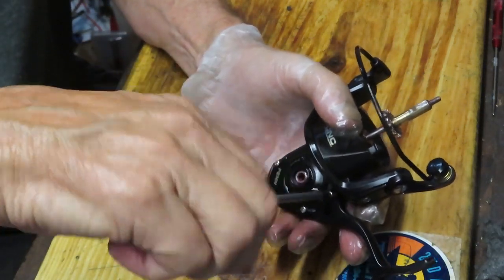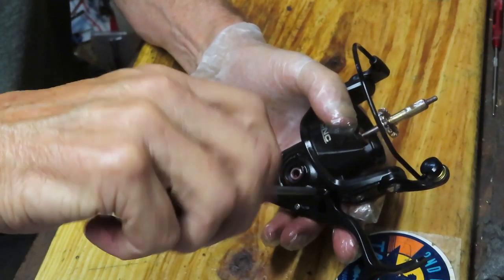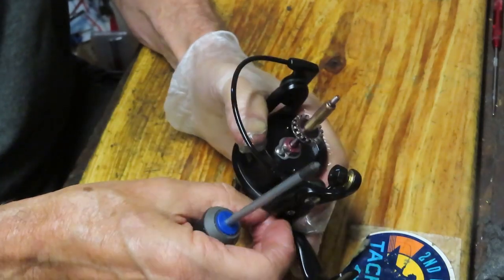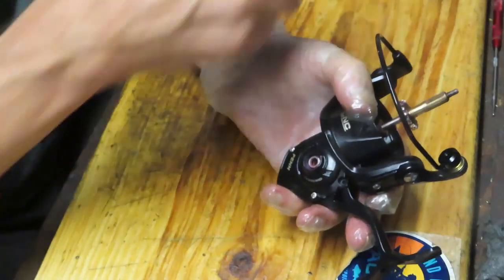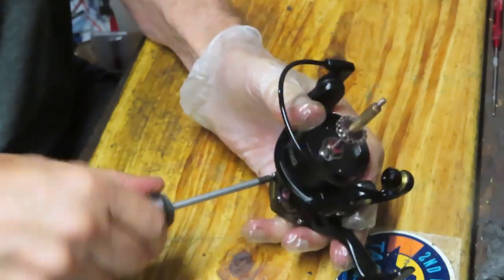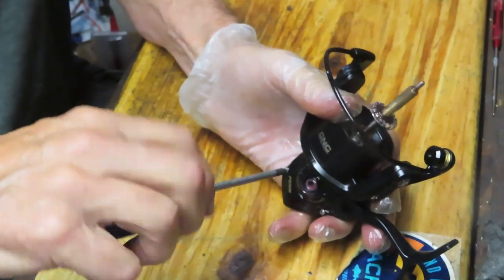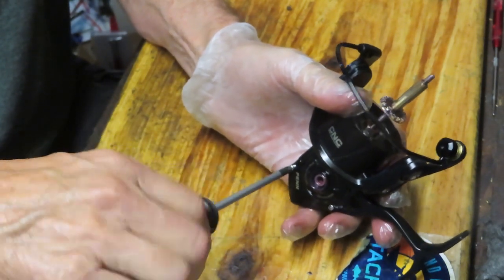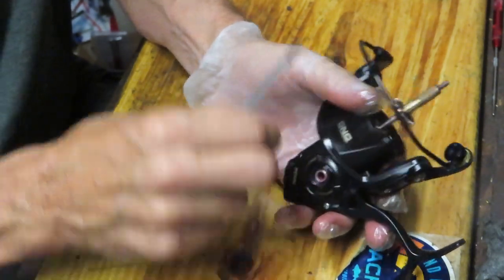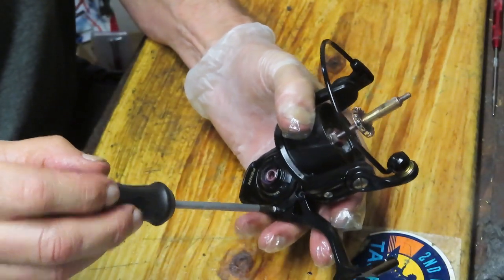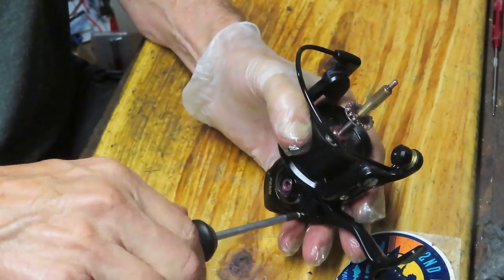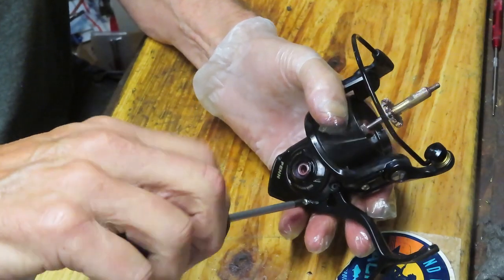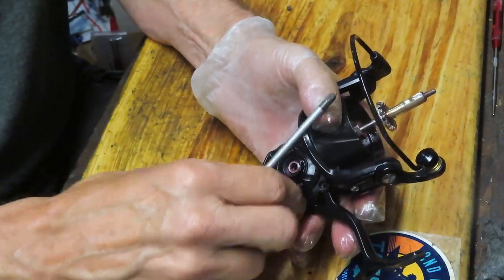Sometimes they'll say, well, I was out and the reel started acting up, but they don't tell you that they snagged something or they dropped it in the water or whatever. You kind of get half of the story, and that always makes it interesting to try and figure out what's going on in the reel itself. Well, to get that axle shaft out of here, and that's a potential, a bent axle shaft. To get the axle shaft out, we have to go and open up the case.